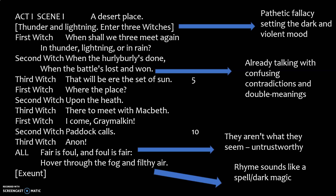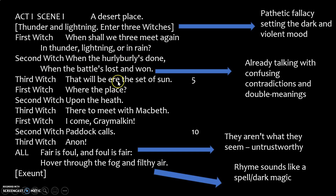We've got the first witch: 'When shall we three meet again, in thunder, lightning, or in rain?' The second one says, 'When the hurly-burly's done, when the battle's lost and won.' Hurly-burly is like chaos and confusion, and already the witches are talking about things in a very confusing way. What do they mean when the battle's lost and won? These are double meanings, contradictions — what they say doesn't match up. The battle can't be lost and won, can it? The third witch says that will be at the set of sun, where the place upon the heath, there to meet with Macbeth.